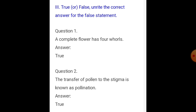Next is the True or False section. Question number one: a complete flower has four whorls — that is true. A complete flower has four whorls.